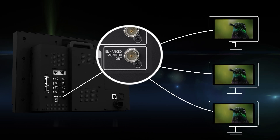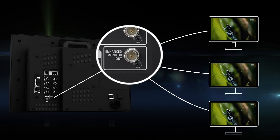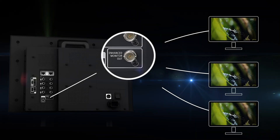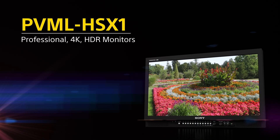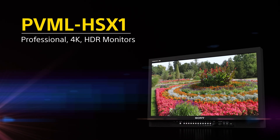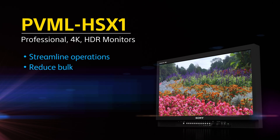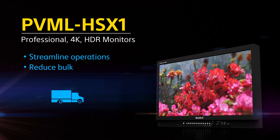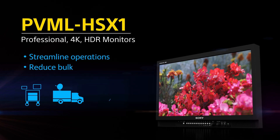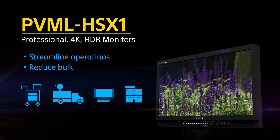The processed signal can then be sent out of the monitor for distribution to other monitoring stations. By integrating capabilities, the PVM X monitors enable you to streamline operations and reduce bulk in areas with limited real estate such as trucks, DIT carts, edit suites, and machine rooms.